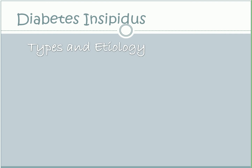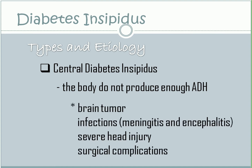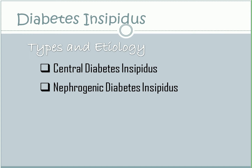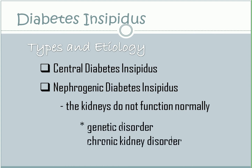Types and etiology of diabetes insipidus. First, we have central diabetes insipidus — when the body does not produce enough antidiuretic hormone. The most common causes are brain tumor, infections such as meningitis and encephalitis, severe head injury, and any complications after brain or pituitary surgery. Second, nephrogenic diabetes insipidus — when there is enough antidiuretic hormone but there is resistance, or the kidneys do not function normally. The defect may be due to a genetic disorder or chronic kidney disorder.